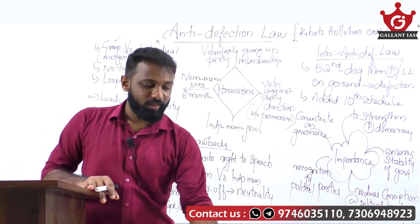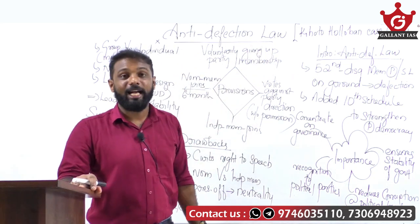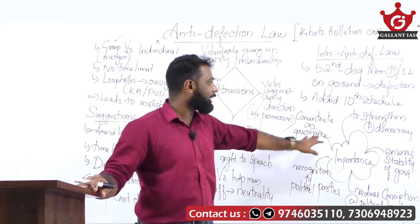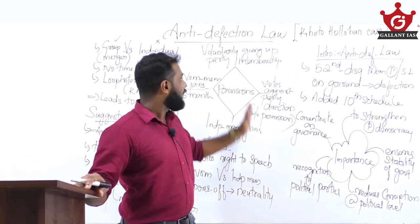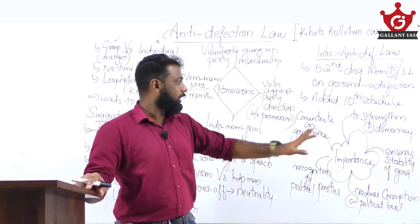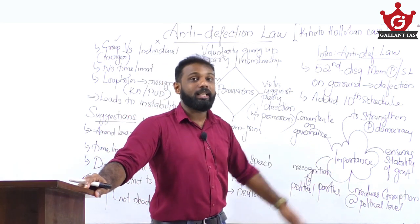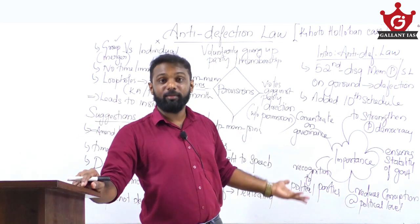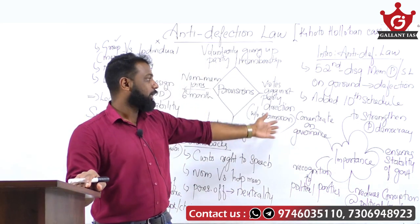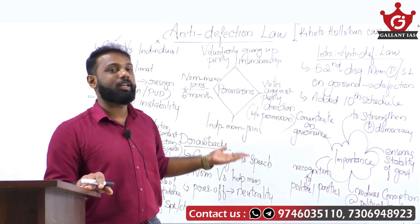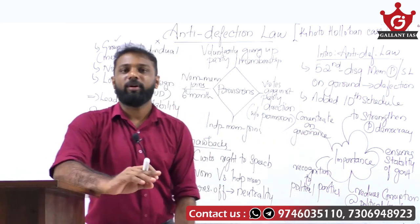The question says the aim was to ensure the stability of the government, so write some of the aims, objectives, or importance of anti-defection law. You can make a spider diagram — not always writing points; this kind of diagram makes your paper much more attractive. The importance includes: it strengthens parliamentary democracy, ensures stability of the government, reduces corruption at the political level, the Constitution recognizes the existence of political parties for the first time, and it enables the government to focus more on governance.